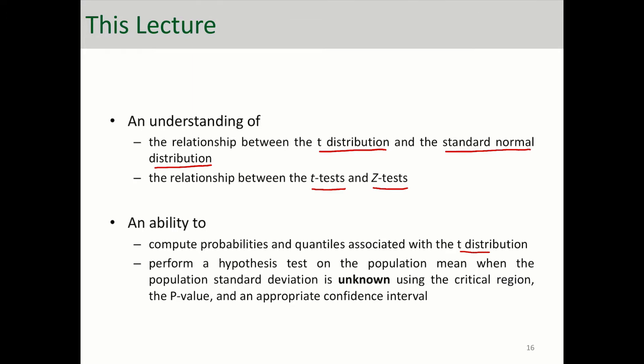We'll be able to understand t-distribution and compute probabilities associated with that and perform hypothesis tests on the population mean when the population standard deviation, or sigma, is unknown, using the three methods that we already talked about: critical region, p-value, and confidence interval.